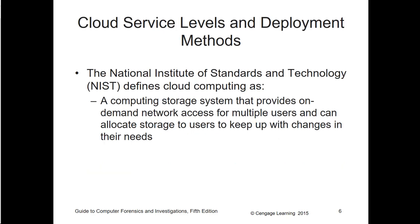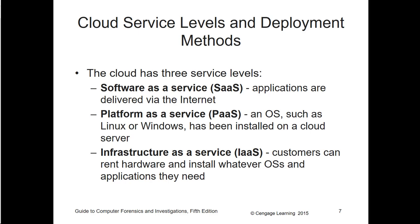There were still a lot of cloud services without really any service level agreements. So NIST, the National Institute for Standards and Technology, came up with a definition: a computing storage system that provides on-demand network access to multiple users and allocated storage to users to keep up with the changing times. That led us to three different service levels: Software as a Service, Platform as a Service, or Infrastructure as a Service.